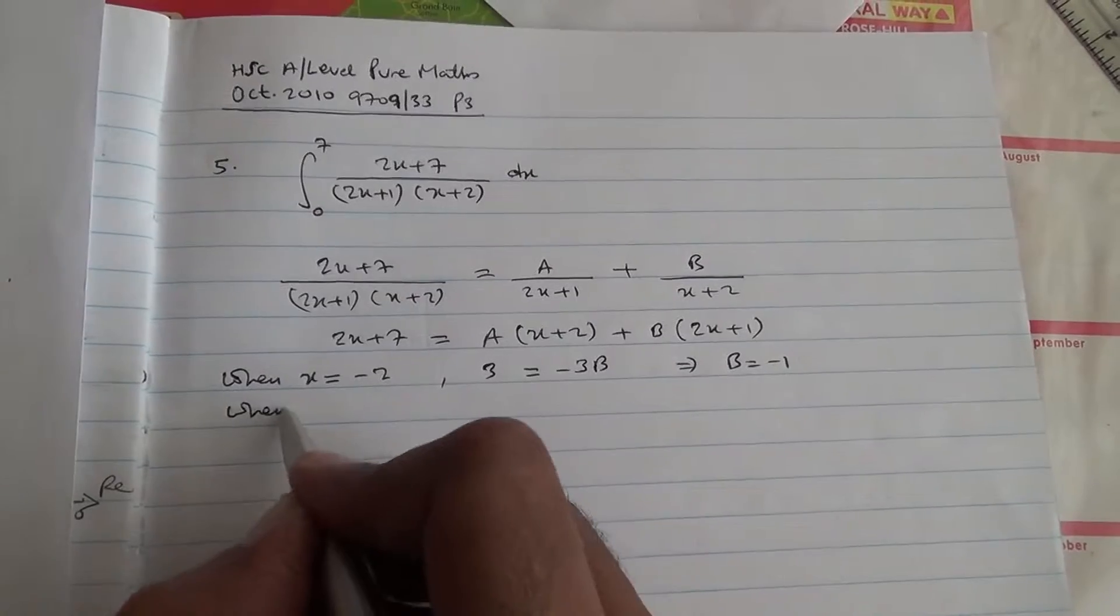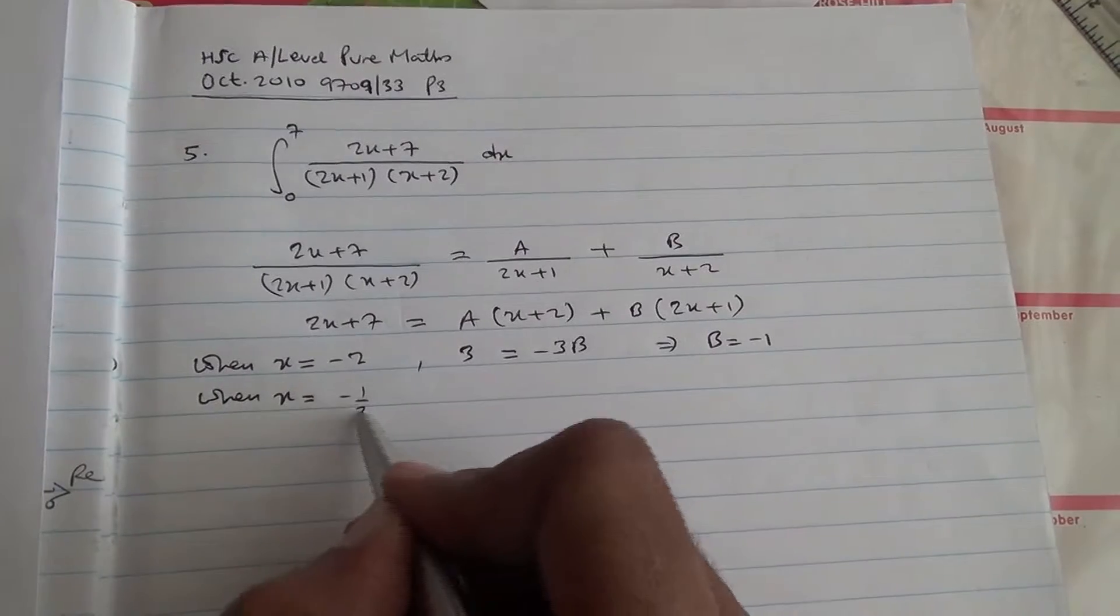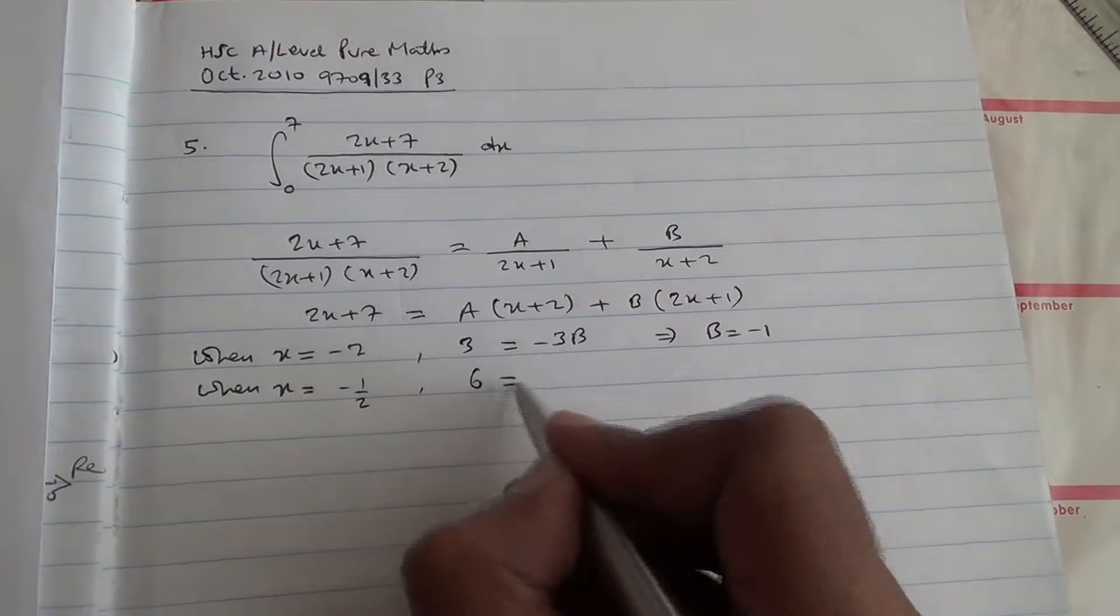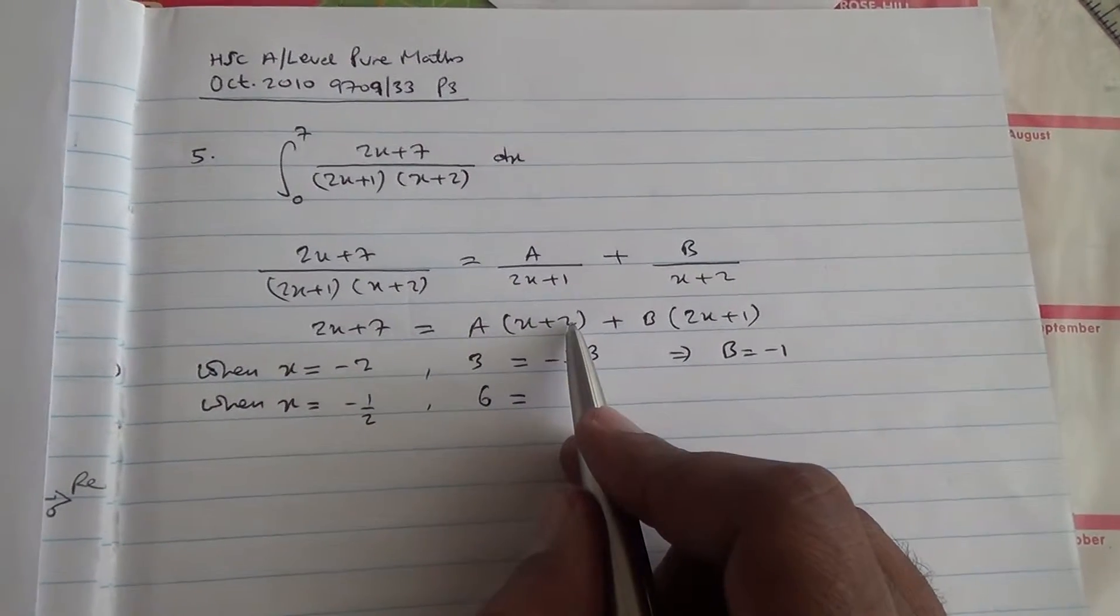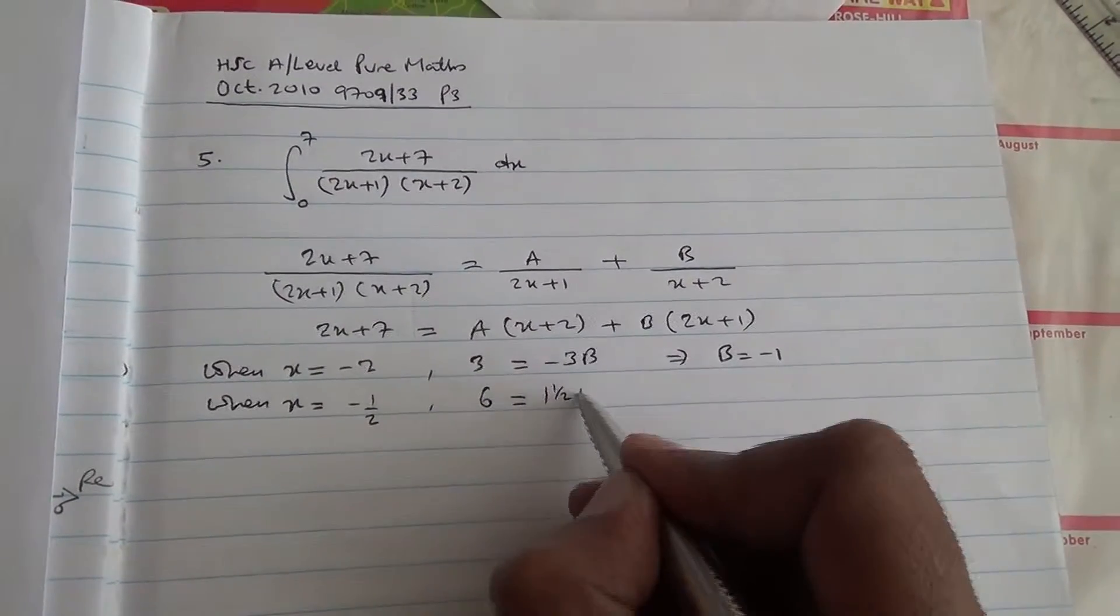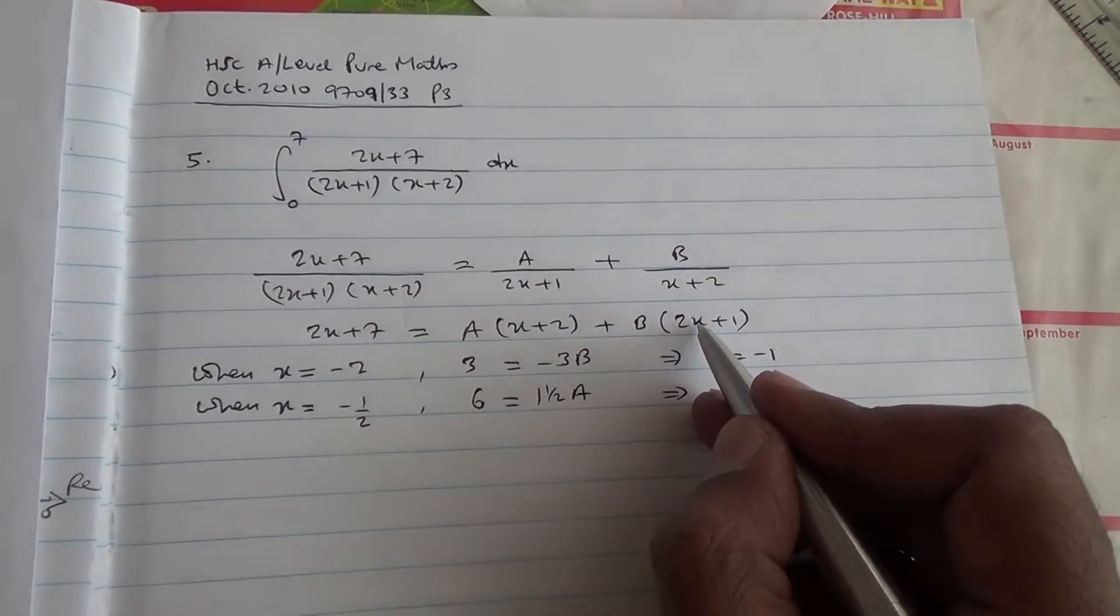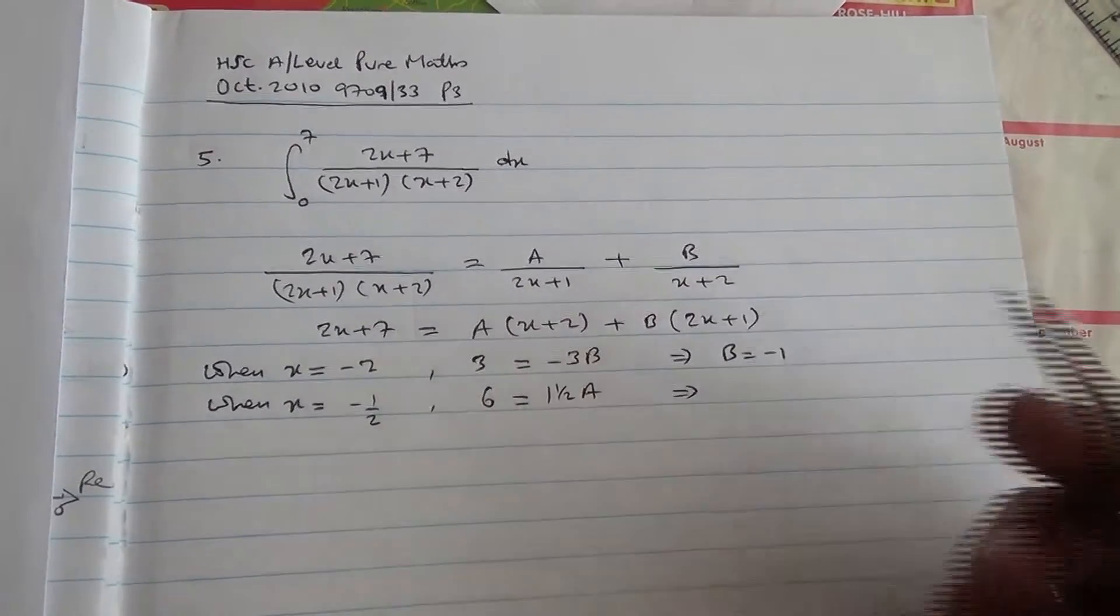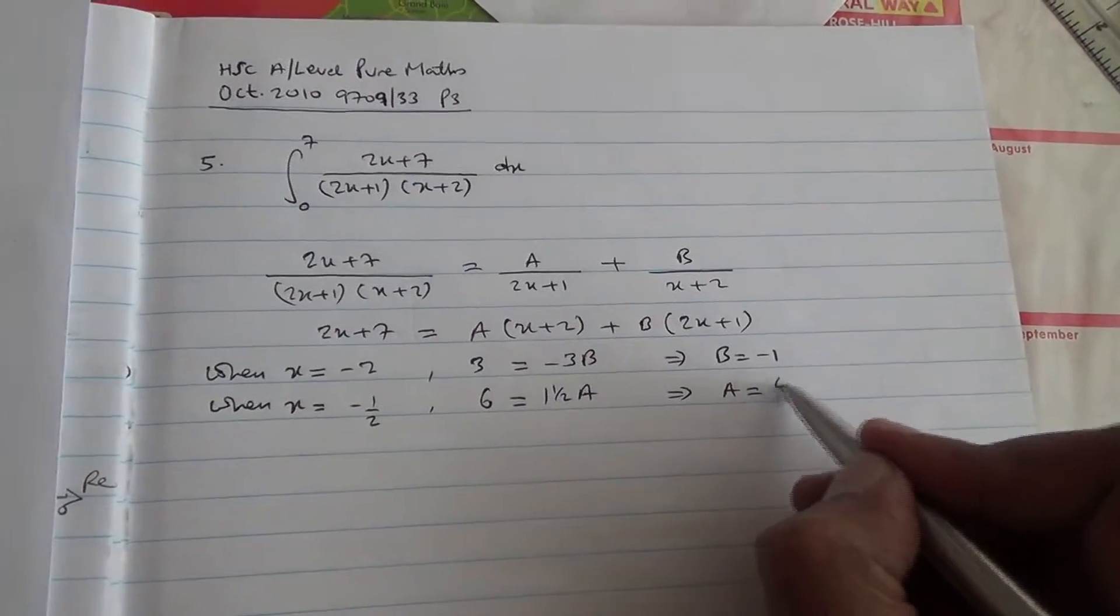Now, when x is equal to, this is 2x plus 1, therefore it's going to be minus half. So we have minus half times 2, which is minus 1, plus 7 is 6, is equal to minus half times, minus half plus 2 is 2 and a half, no sorry, it's 1 and a half, so I got 1 and a half a, and that leaves us with, if you put minus half here, it's going to cancel out. Because minus half times 2 is minus 1, plus 1 is 0, 0 times b is 0. So I'm going to get a squared to 6 divided by 1 and a half is 4.